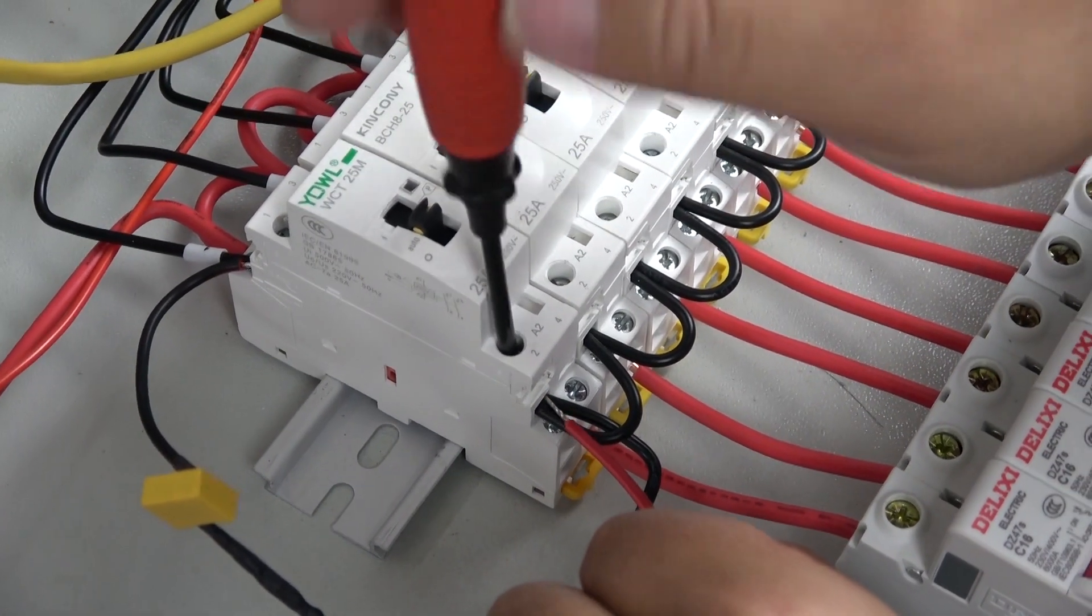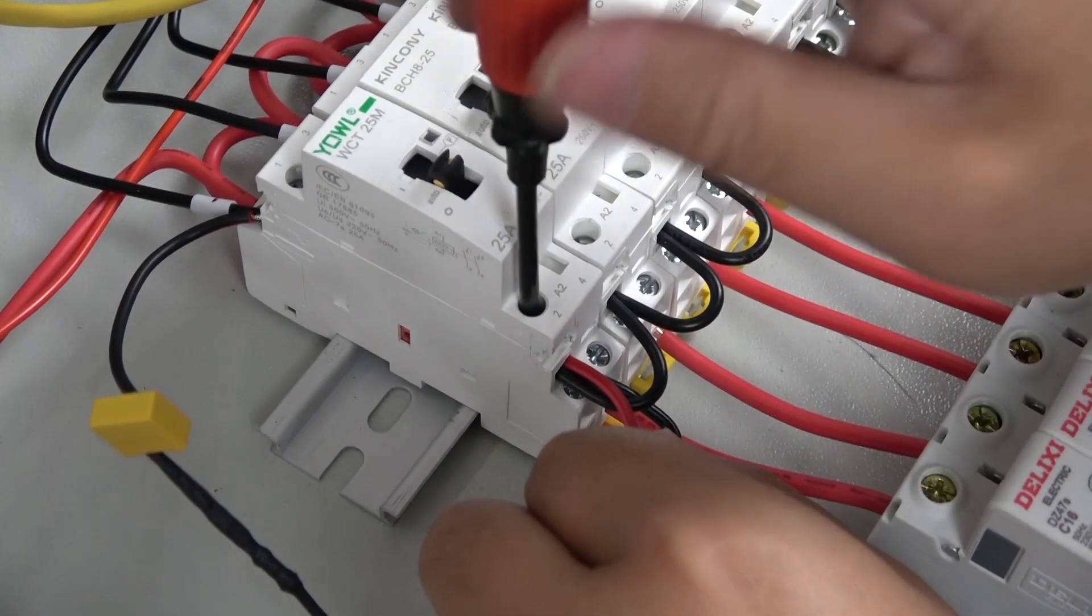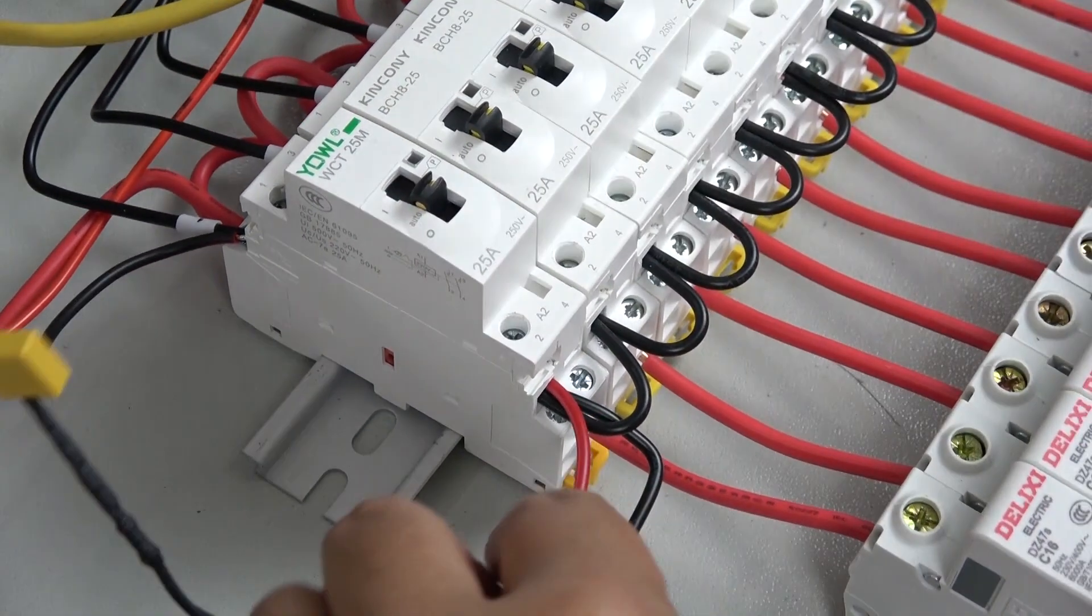If you have many contactors that need to connect with A2, you can connect them together using one line as the common line.